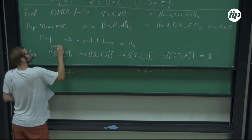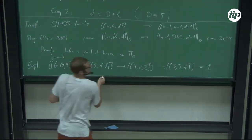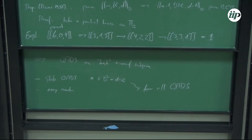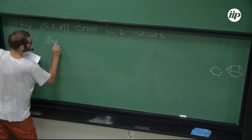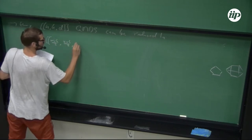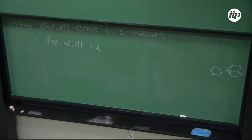We call the starting object the parent code and the derived codes its children in the family. The key observation is that every [[n, k, d]] quantum MDS code can be reduced by partial traces to an [[(n+k)/2, (n+k)/2, 1]] code, which is the identity. The quantity n+k always stays constant because n decreases by 1 and k increases by 1 at each step.